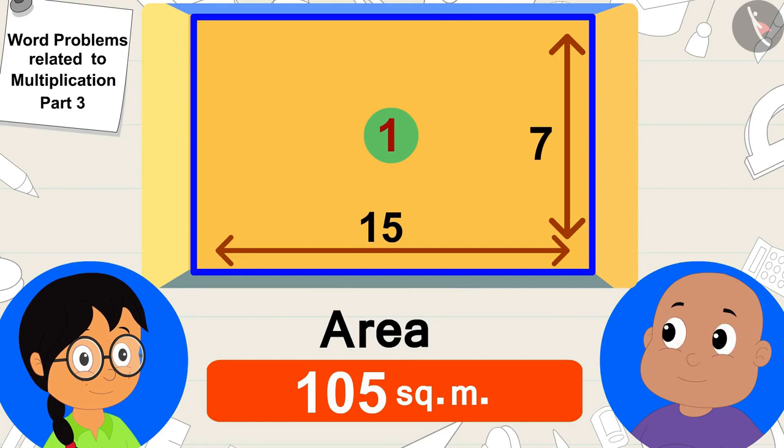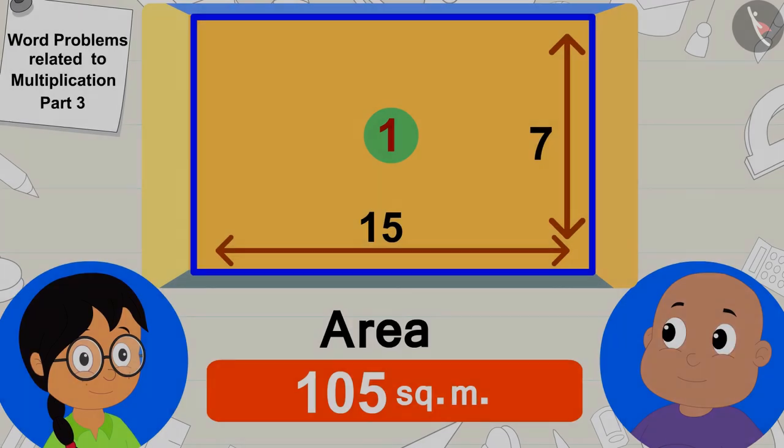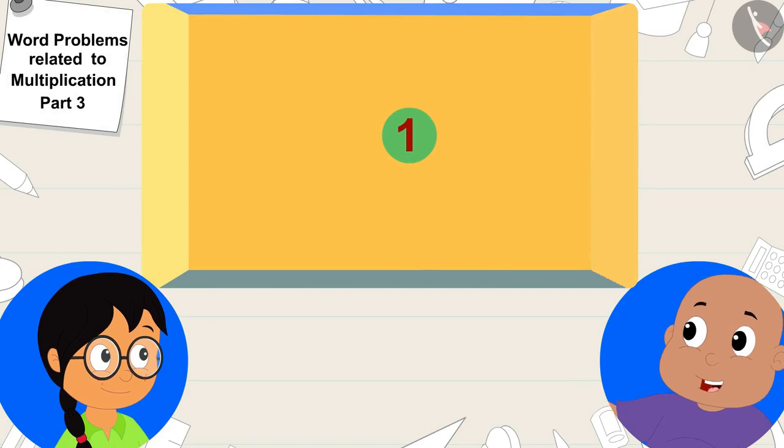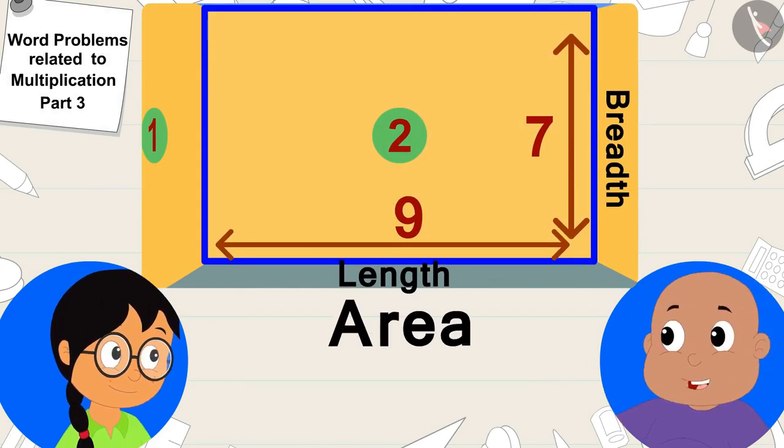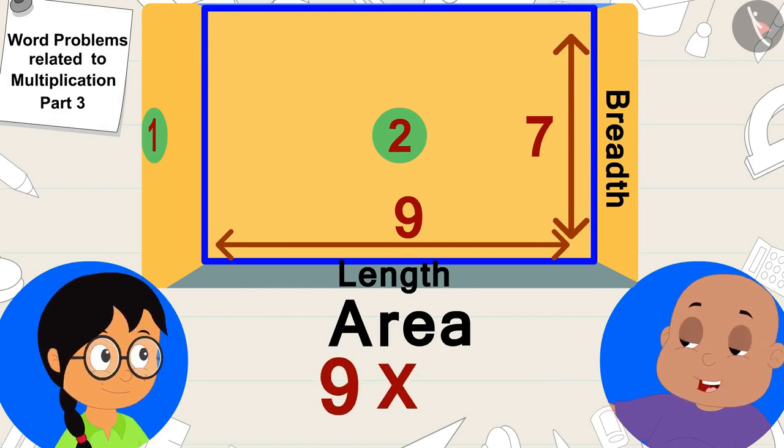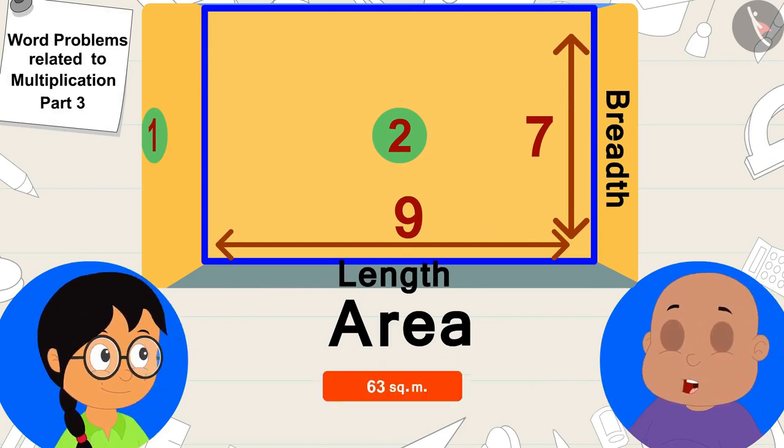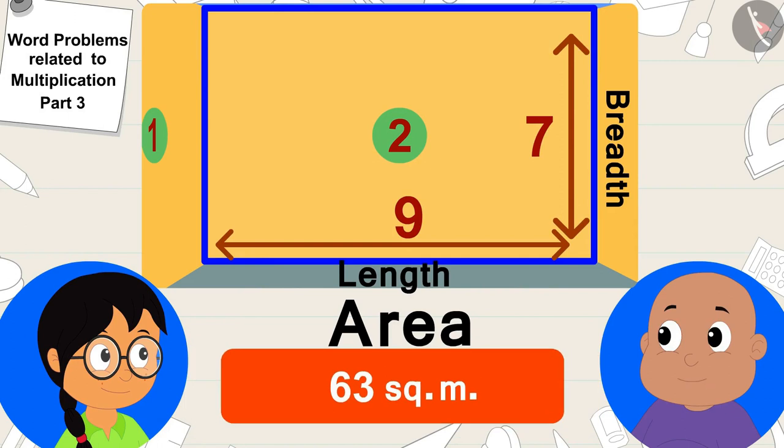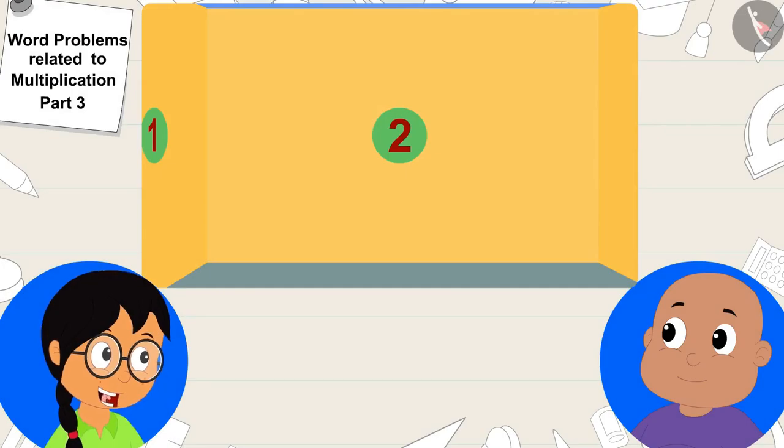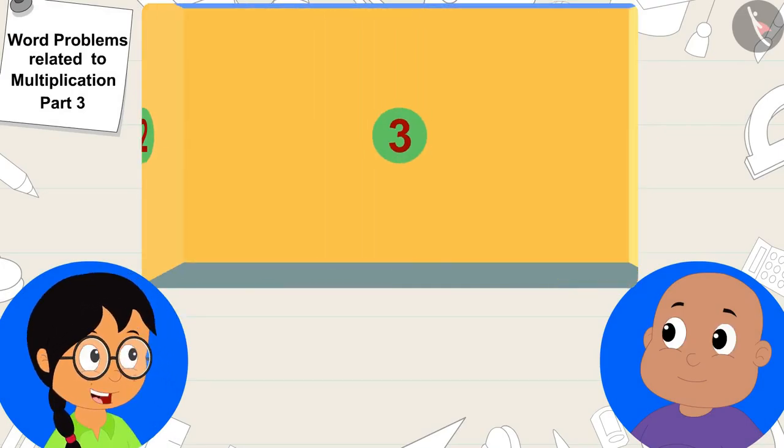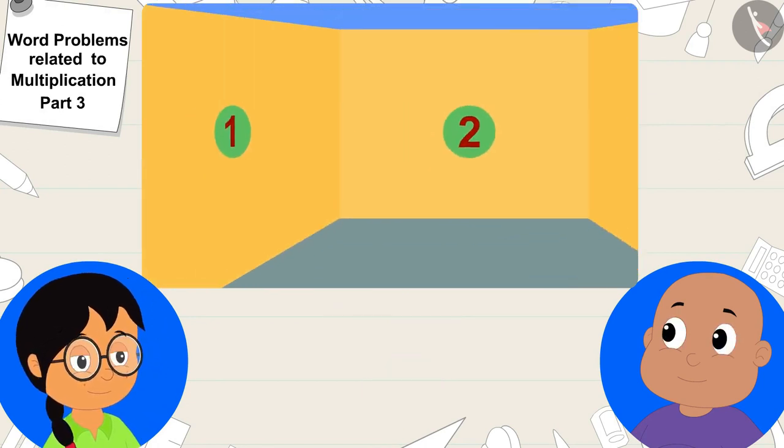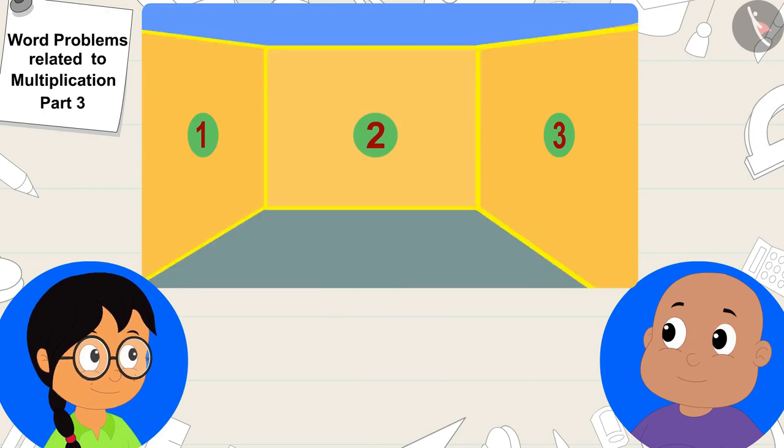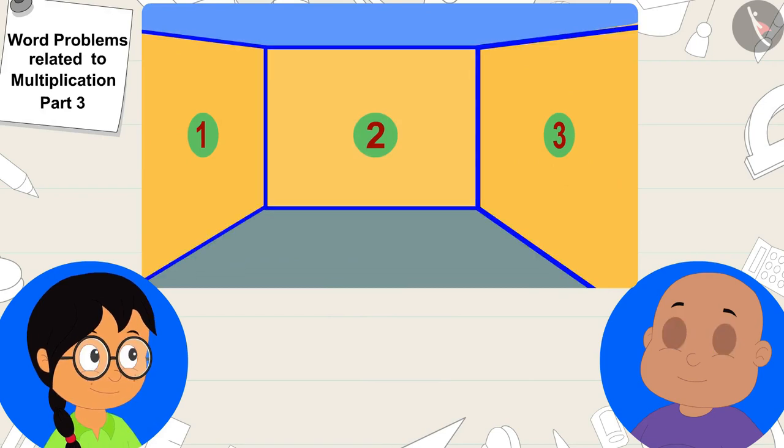Absolutely right. This wall is also rectangular, so the area of this wall will be 9 times 7 or 63 square meters, Bablu told Meenu. Now we just have to find the area of this wall and then we will know which one of these walls has the maximum area, Meenu told Bablu.